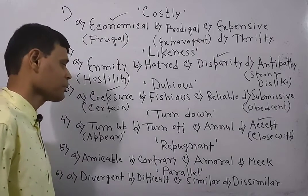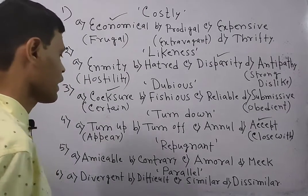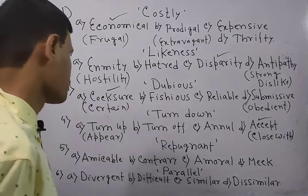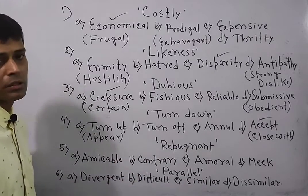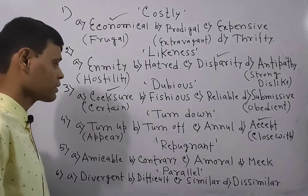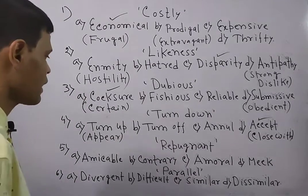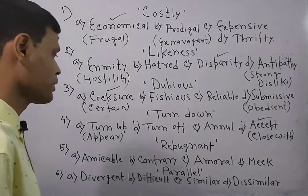Contrary means repugnant or opposite, or you can say something like adversary or opposed. Amicable means amicable. If repugnant means opposed or contrary means opposed, the opposite is amicable or friendly. Neither amoral nor meek. Meek means extremely gentle will be the answer here.